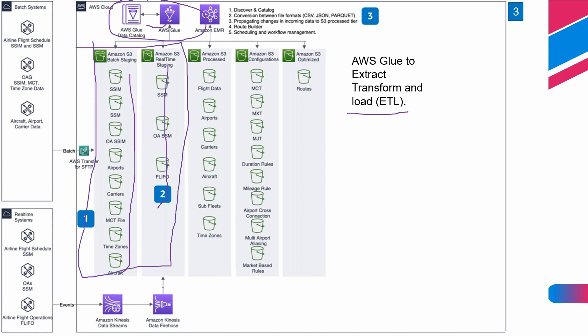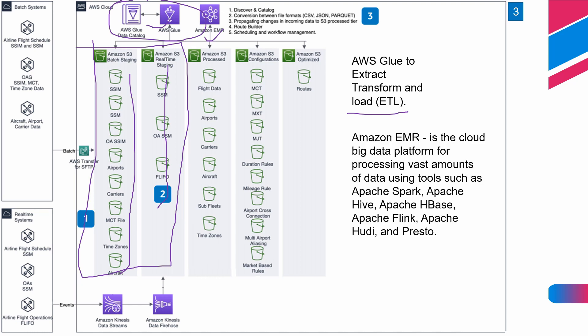We can consider the AWS Glue-transformed flight data saved in S3 as an S3 data lake. We can use this S3 data lake as big data and process it using AWS EMR. Amazon EMR is the cloud big data platform, used for processing vast amounts of data using tools such as Apache Spark, Hive, HBase, Flink, Hudy, and Presto. Here we use AWS Glue and Amazon EMR-based processes to discover, catalog, and process inputs, and create the processed data in Amazon S3, combining batch and real-time data to create the processed flight data.